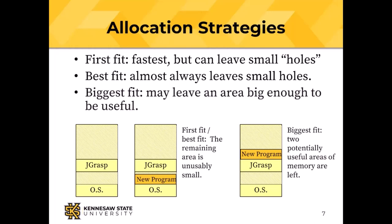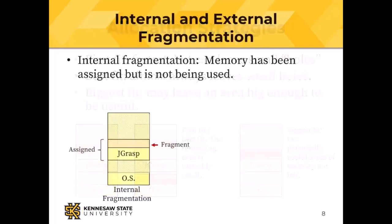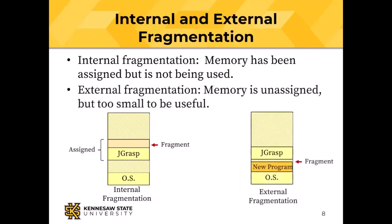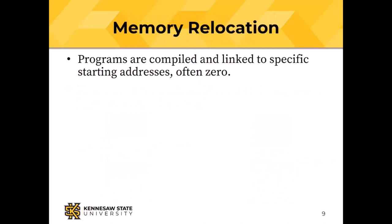Biggest fit probably leaves a space large enough to be useful — there are now free areas of memory each of which is potentially big enough to do something with. Memory can be fragmented either internally or externally. In internal fragmentation, JGRASP has asked for more memory than it needs, so it's assigned but not being used. External fragmentation is that little hole between the new program and JGRASP.